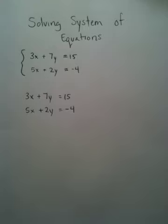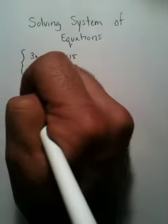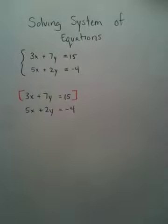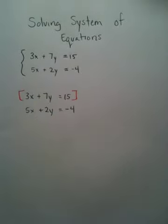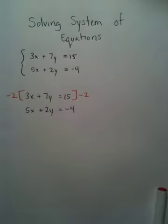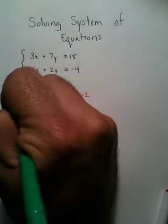Now you have to decide, what are you trying to eliminate? Are you trying to eliminate x or are you trying to eliminate y? I'm going to eliminate y. In order to eliminate y, I've got to make this 7y and this 2y the same number. I'll do that by multiplying this by negative 2 and multiplying this by positive 7.